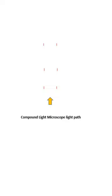Make a light source, put three lenses named as condenser lens, objective lens, and ocular lens.